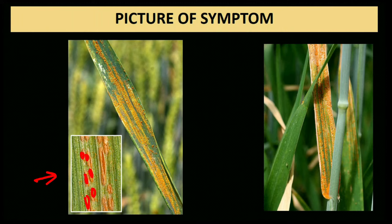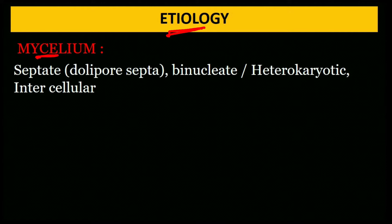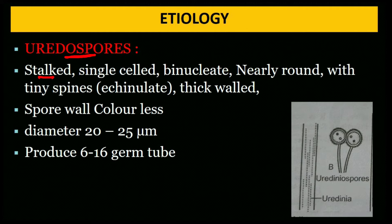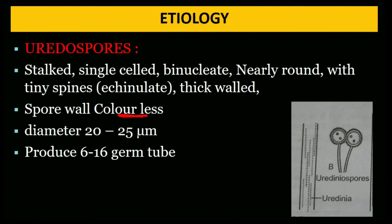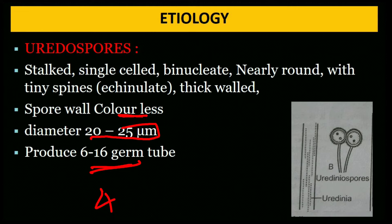Etiology: Mycelium is septate, binucleate, and intercellular. Uredospore is stalked, single-celled, binucleate, nearly round with tiny spines and thick wall. Diameter is 20–25 µm. It produces 6–16 germ tubes — so the germ tube numbers are different for all three rusts: stem rust has 4, brown rust 7–10, and yellow rust 6–16.